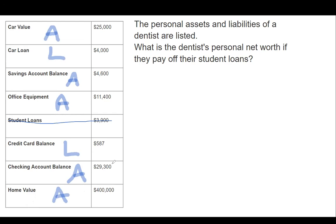To find net worth, we are going to add the assets and subtract the liabilities. So: 25,000 minus 4,000 plus 4,600 plus 11,400 minus 587 plus 29,300 plus 400,000. We find that the doctor's net worth is $465,713.